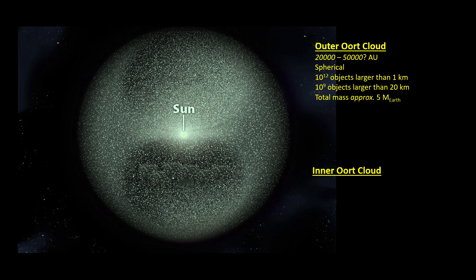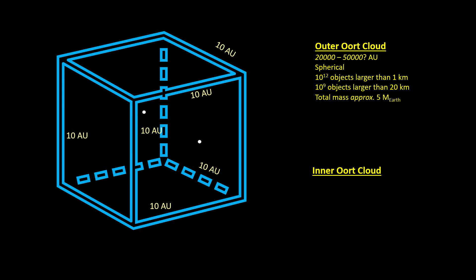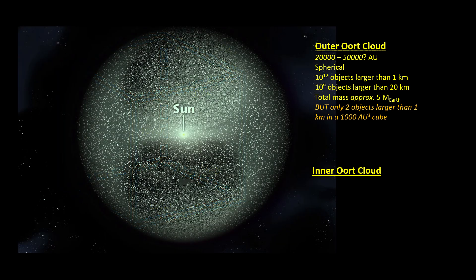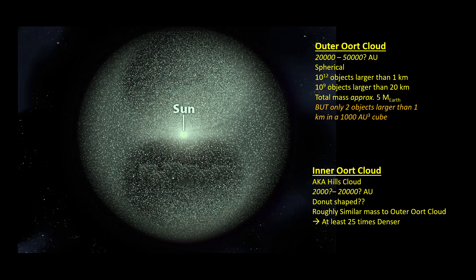The Oort cloud consists of two parts. The outer Oort cloud is roughly spherical, has perhaps a trillion objects larger than a kilometre in diameter, and perhaps a billion objects larger than 20 kilometres. Its total mass is around five times the mass of the Earth, but when you do the maths it's not very dense at all — you'd only have two objects larger than one kilometre in a thousand cubic astronomical unit cube. The inner Oort cloud, sometimes known as the Hills cloud, is donut-shaped and has roughly similar mass to the outer Oort cloud, but because of its smaller volume, it must be at least 25 times denser.